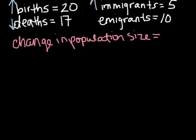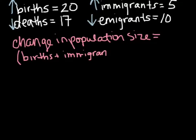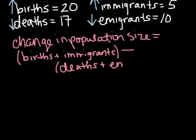Emigrants will decrease. So to figure out the change in population size, we take the number of births plus the number of immigrants, and then we subtract from that the number of deaths and the number of emigrants.